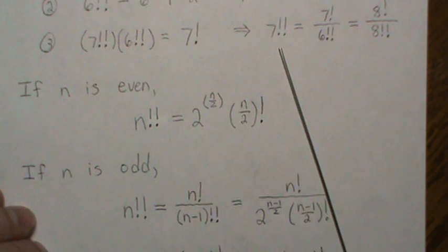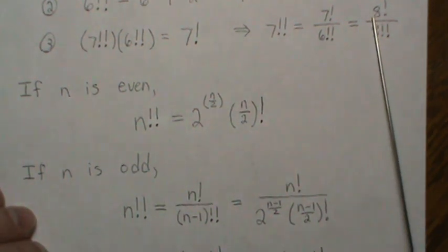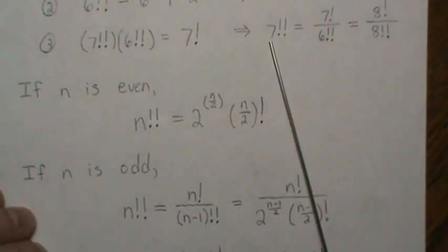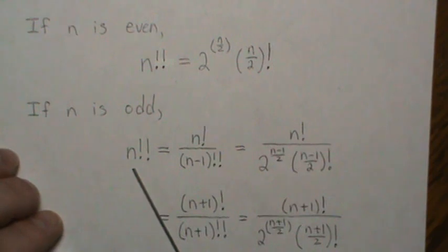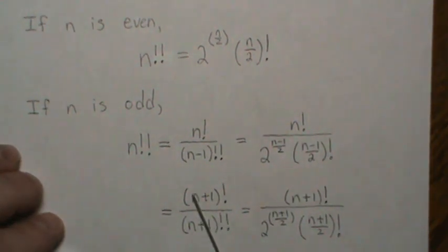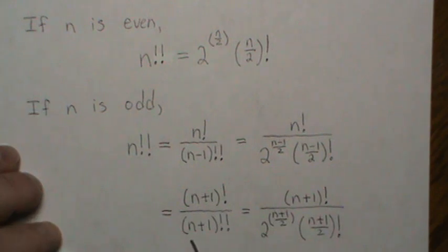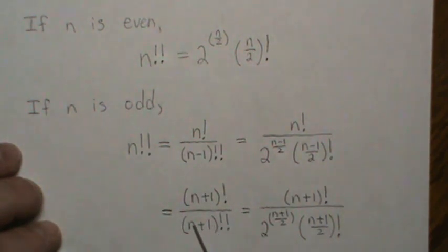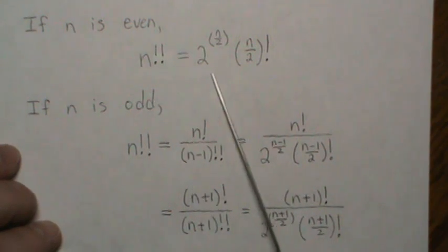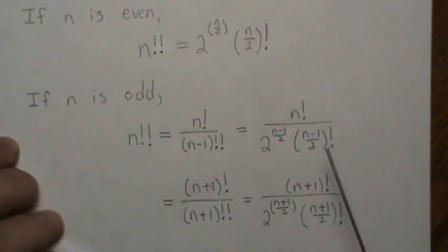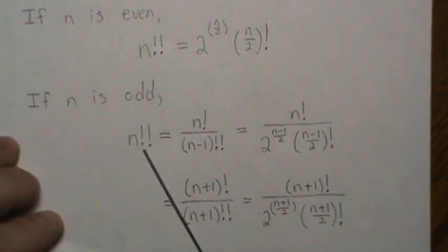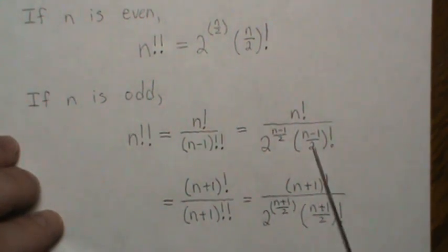We can also go the other way: add one and then divide out the double factorial starting at that number. So n double factorial can also be written as n plus one factorial divided by n plus one double factorial. Since n plus one is even, we can apply the even formula, and we get another equivalent expression. Both of these formulas are valid for n double factorial when n is odd.